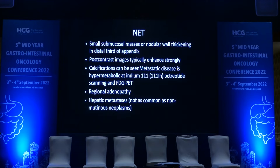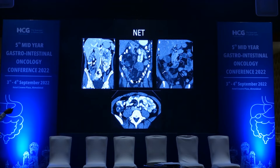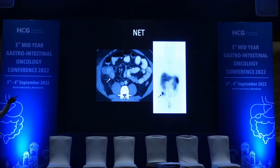Coming to the next subset — NETs — what you see on images: small submucosal mass-like or nodular wall thickening in the distal one-third of the appendix. On post-contrast images, it is a vascular lesion showing typical avid contrast enhancement. Calcification may be present. Hypermetabolic uptake on Indium-111 or octreotide scan rather than FDG PET; DOTATATE PET is used. Regional adenopathy yes; hepatic metastasis generally not as common as with other adenocarcinomas. At the right iliac fossa you can see a well-defined eccentric calcification associated with the appendicular lesion, and on the last image mesenteric puckering is associated with the primary lesion. The DOTATATE image shows significant uptake at the primary site; the other uptake shown on the DOTA image is the spleen, not the primary lesion.